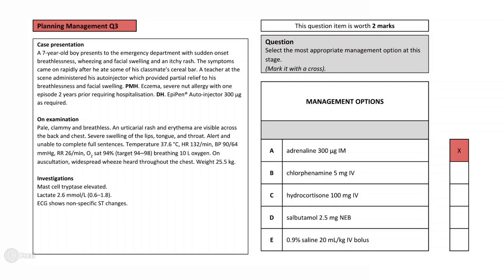In this patient's case, despite already having been administered 300 micrograms of adrenaline, he still has life-threatening symptoms and signs. Following the resuscitation guidelines, this necessitates a second redose of intramuscular adrenaline before pursuing any other treatments further down the line. Thus, adrenaline is the correct answer.